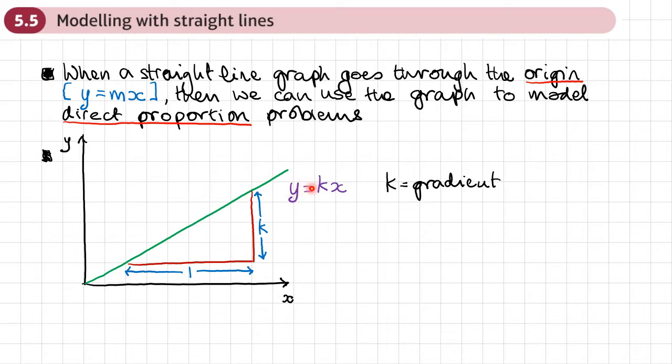So for example, if the equation of the line was y equals 2.5x, then every time x increases by 1, the y value would increase by 2.5. So that way, it helps us to be able to interpret what the gradient does in the context of a question.